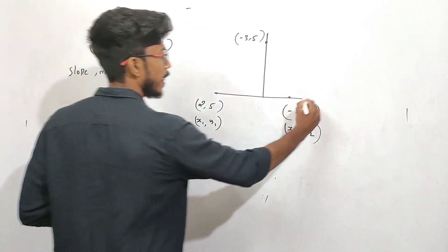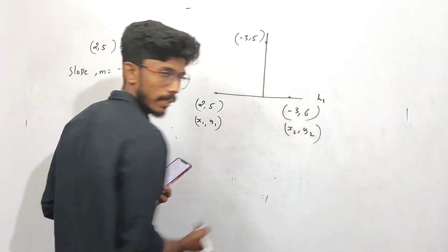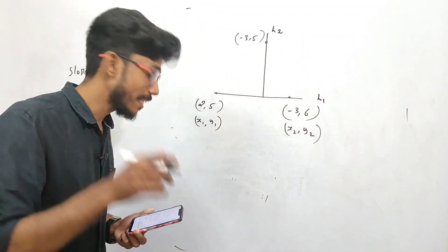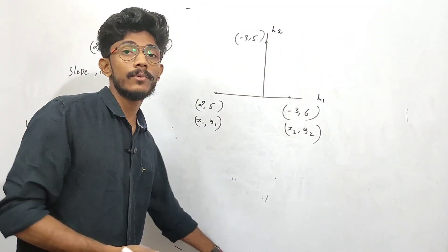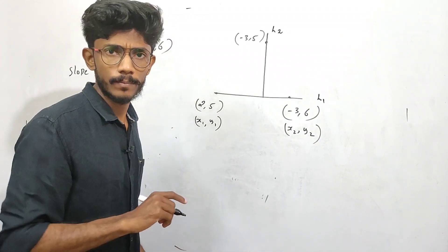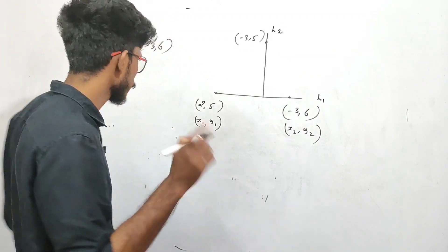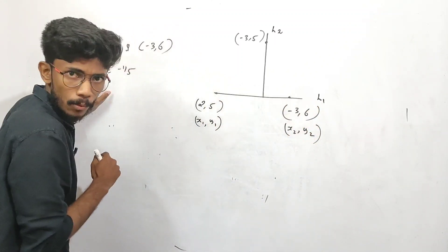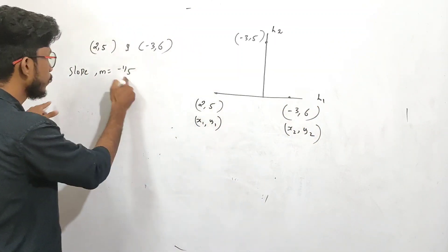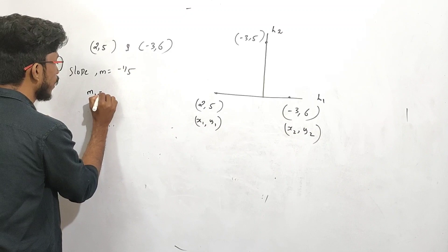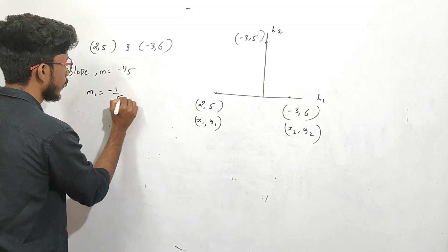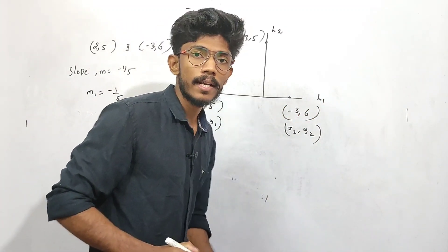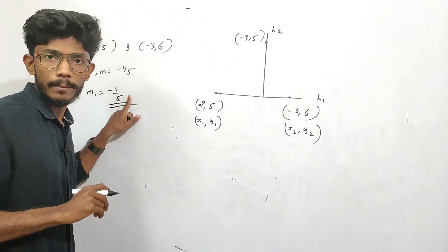We have line L1 and line L2. L2 is the line whose equation we need. Looking at the slope of L1, M1 equals -1/5, because L1 is the line through (2,5) and (-3,-6).